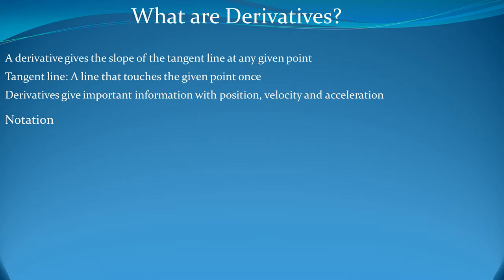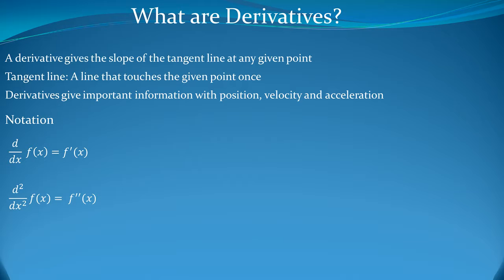Here is the notation for derivatives. We have d/dx f(x), which equals f prime of x. We use a prime slash for each derivative, or a d/dx, depending on which notation you need to use. For the second derivative, we have d² over dx² of f(x), which equals f double prime of x.